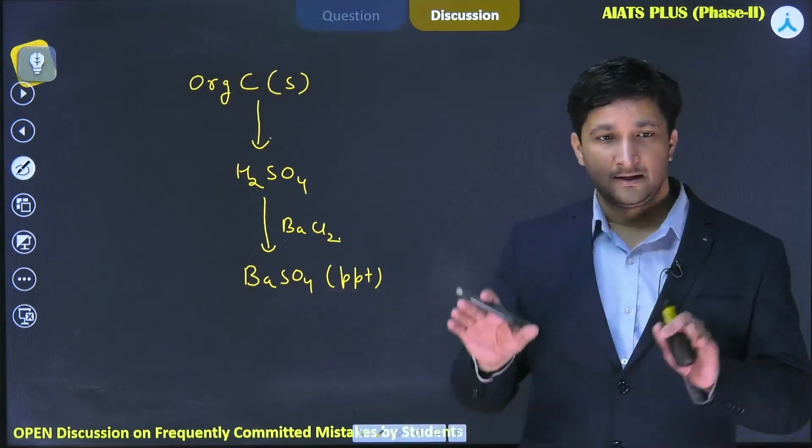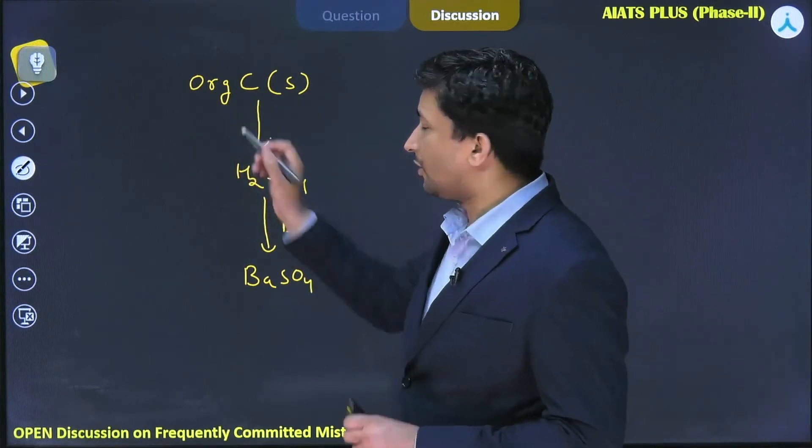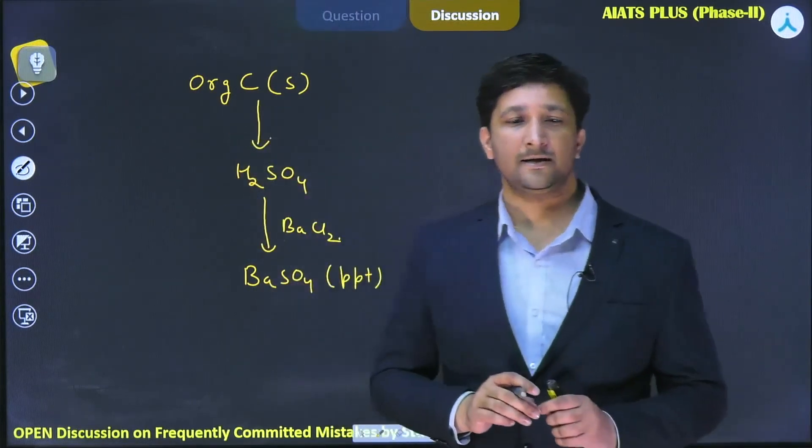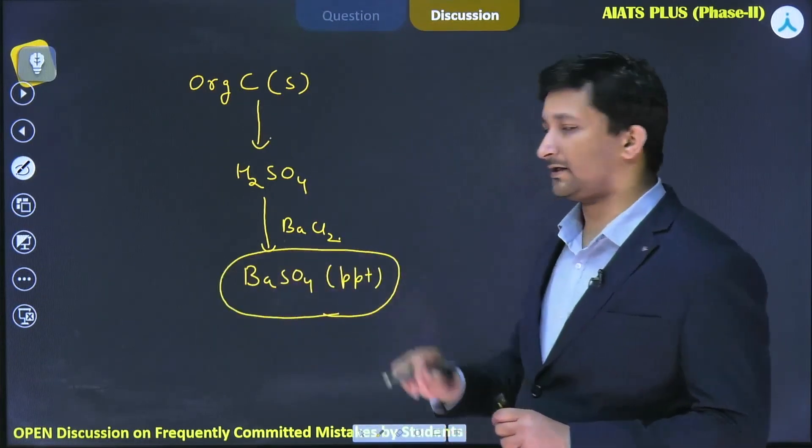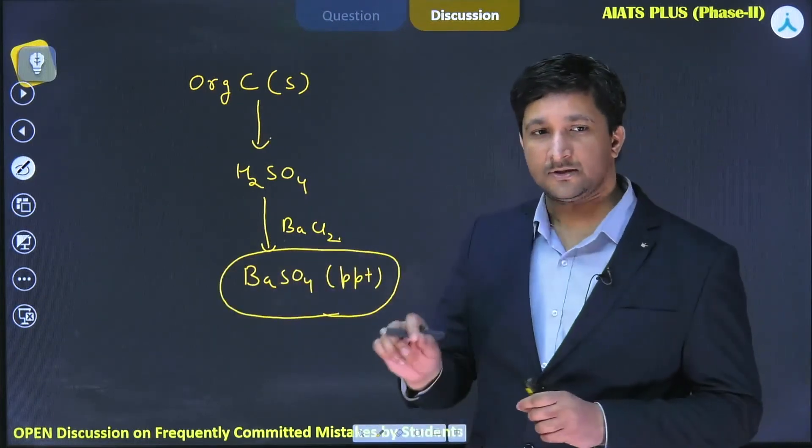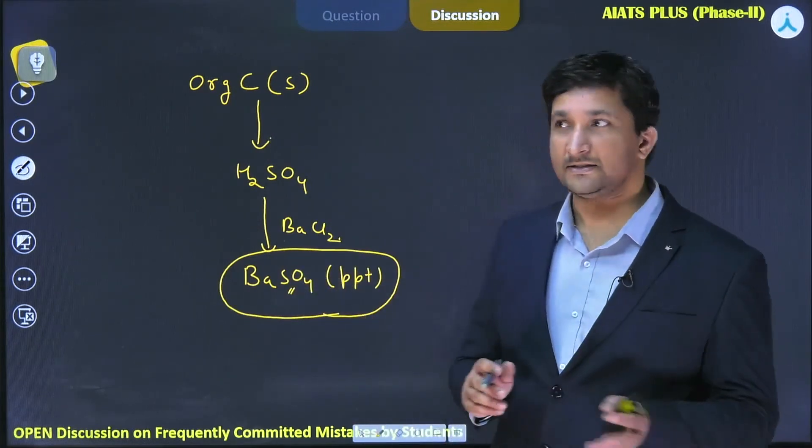This barium sulfate basically precipitates. What happens here is that all the sulfur that was present in the organic compound finally comes out in the form of barium sulfate. If we can find out the amount of sulfur present in this barium sulfate, then we can very easily find out the amount of sulfur in the organic compound.